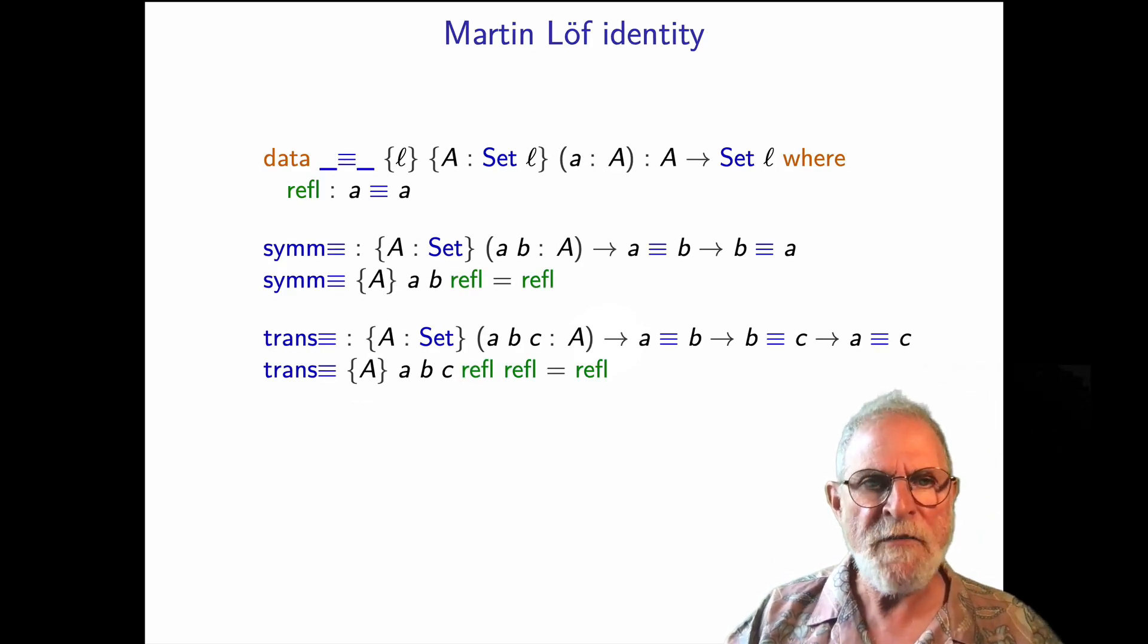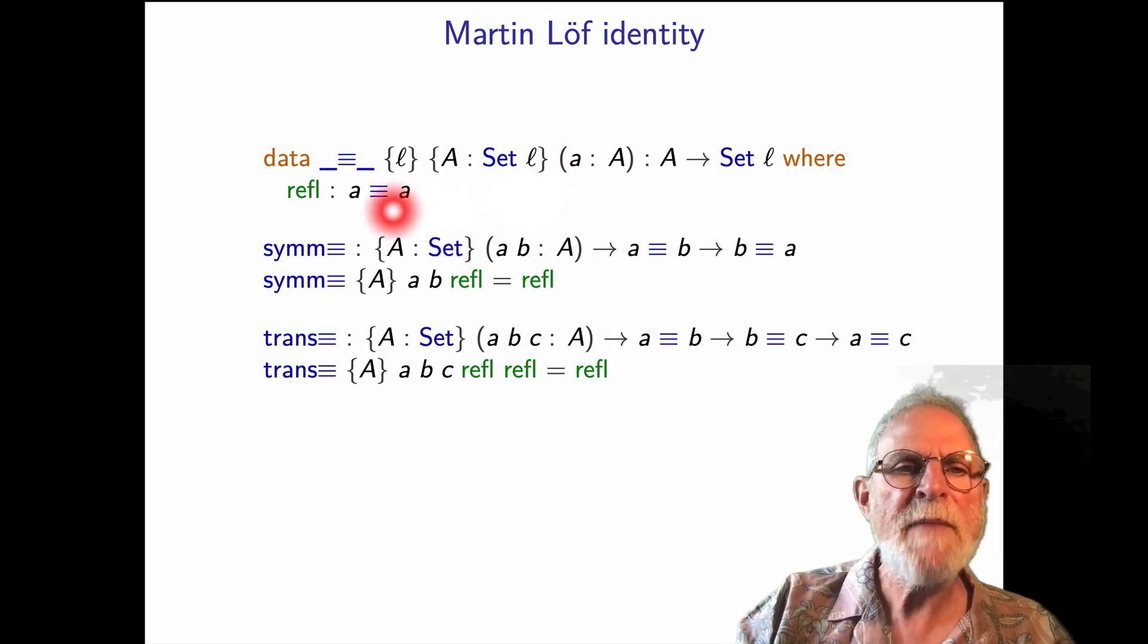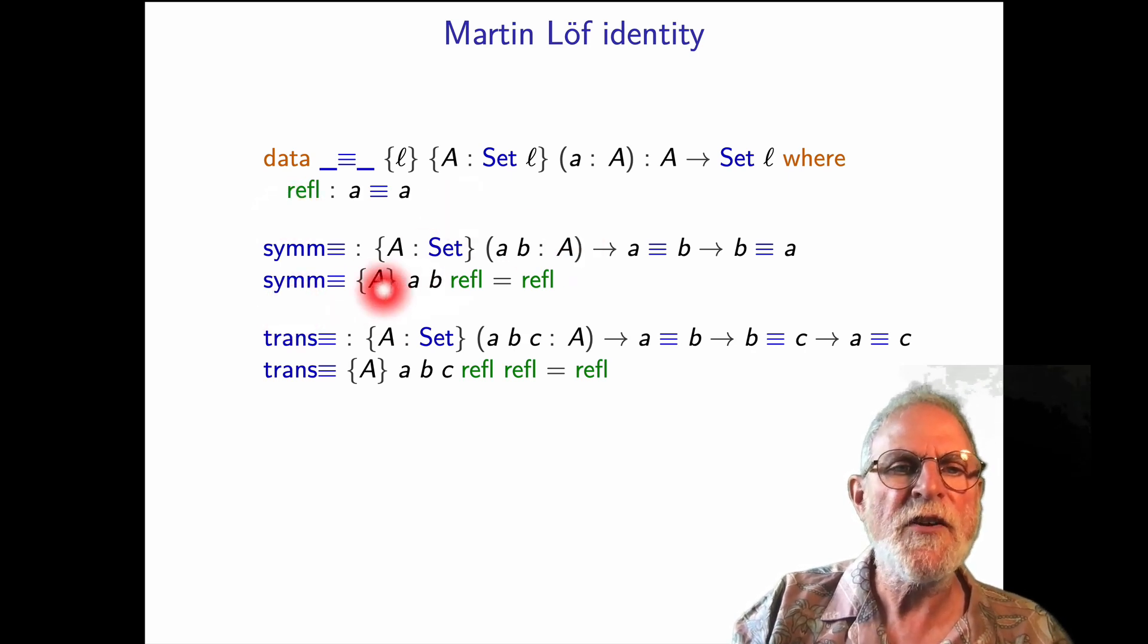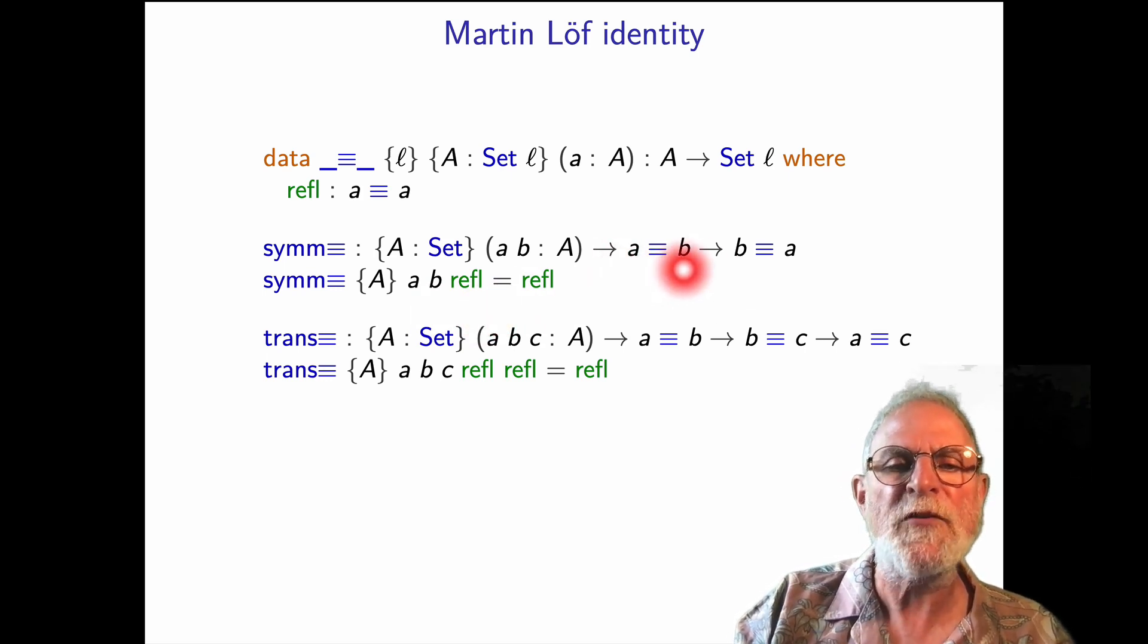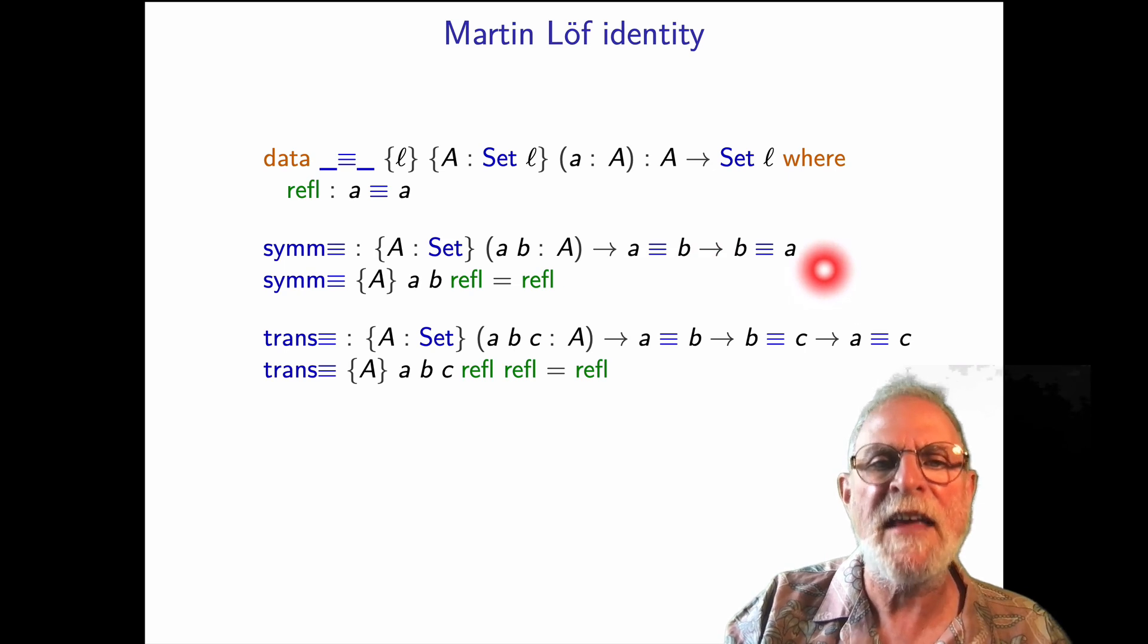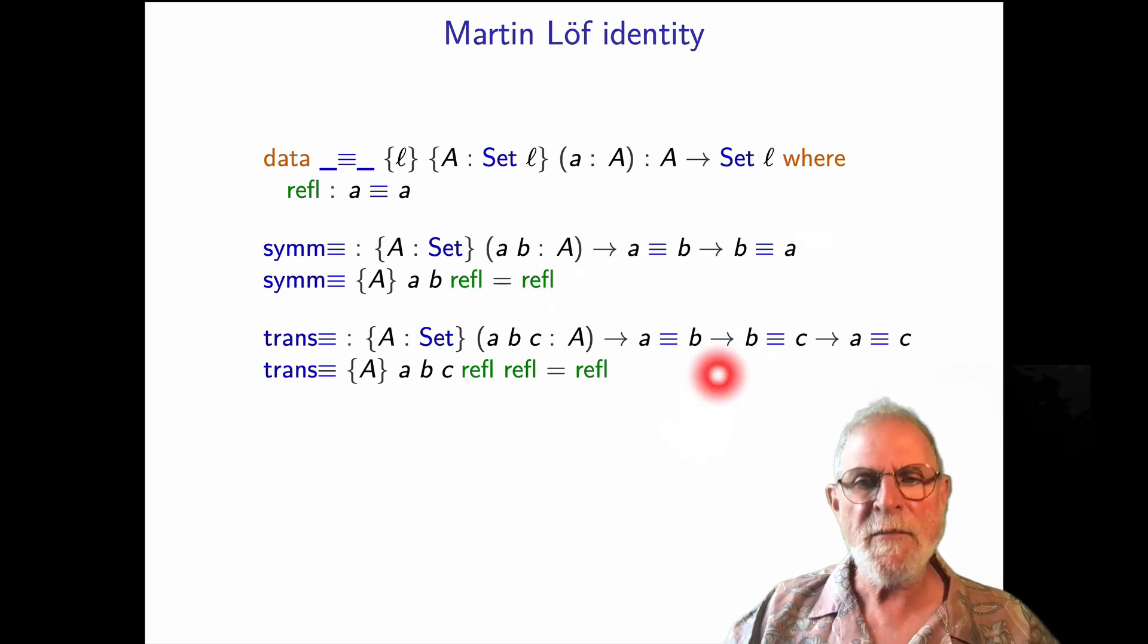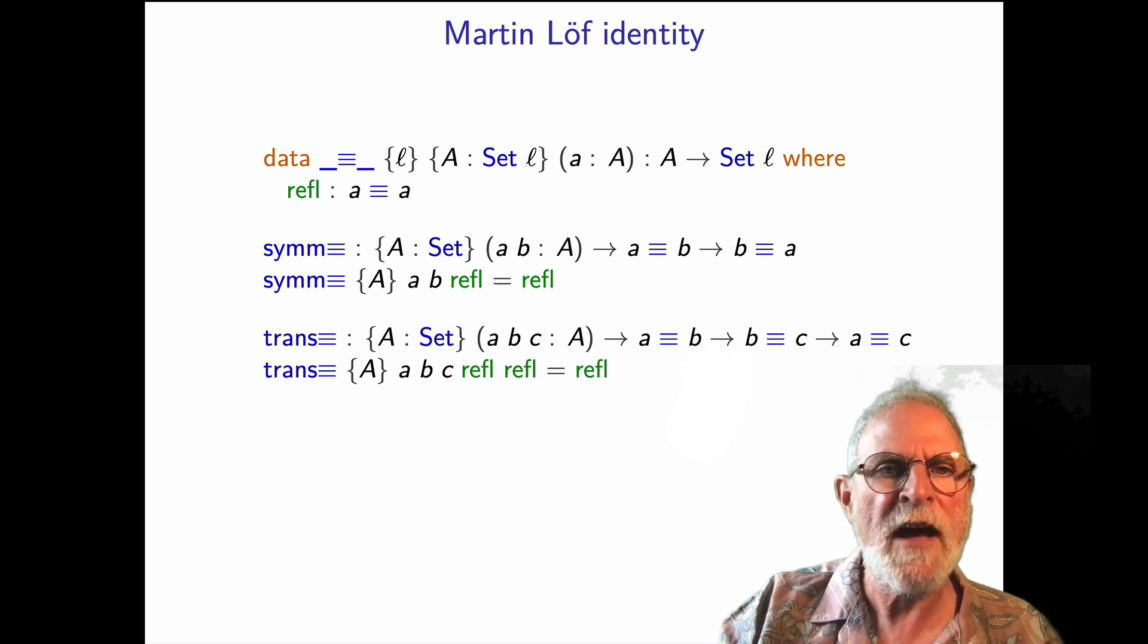So Martin-Löf identity is defined in this way: the type a equals a is inhabited by reflexivity. And we can pattern match on that. So it's very easy to show symmetry, because when we pattern match on reflexivity, then it knows the only way that a equals b can hold, since it's reflexive, is if b is in fact a. So this becomes a equals a. Now we've got a equals a implies a equals a, which is, again, a equals a is proved by reflexivity. Similarly, for transitivity. So that's all very straightforward with Martin-Löf identity.